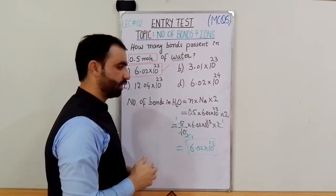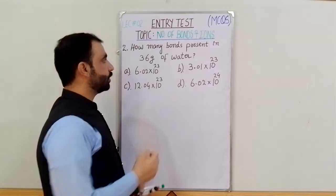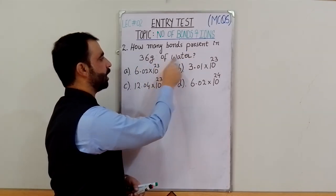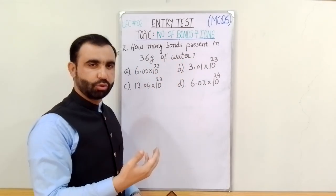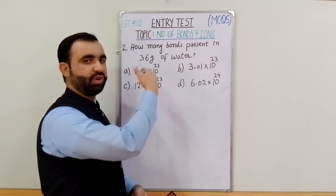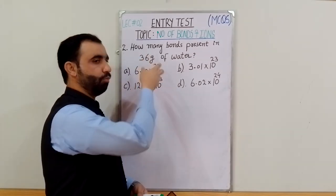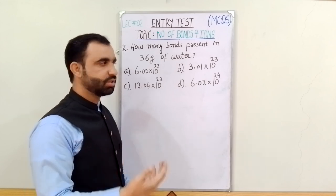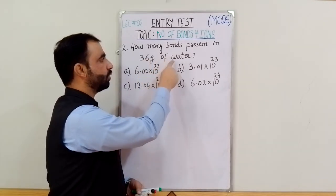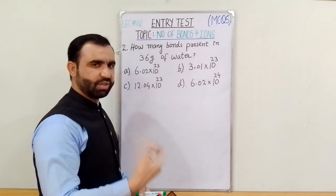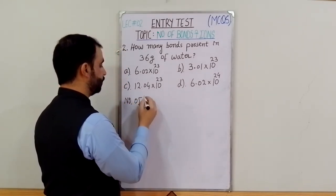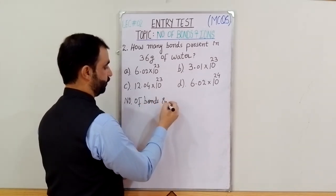MCQ 2: How many bonds are present in 36 grams of water? The options include 1.05 moles, 1.06 moles, 2.0 moles of water.